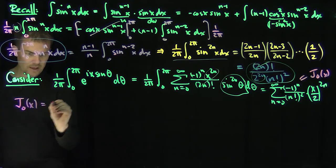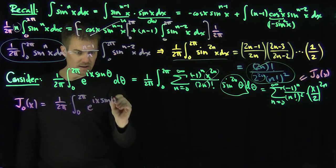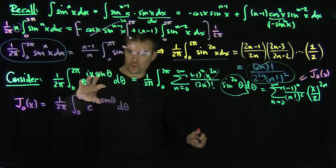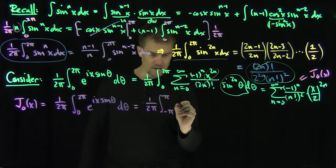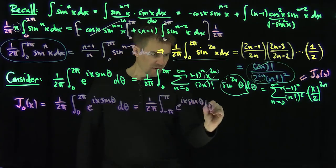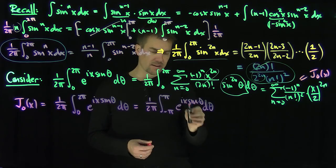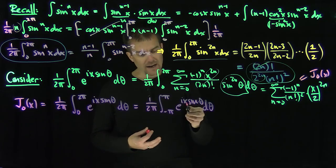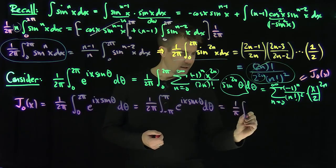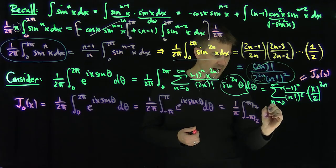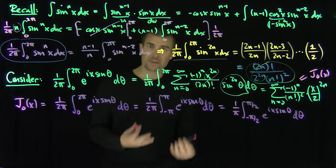So J₀(x) = (1/2π) times the integral from 0 to 2π of e^(ix sin θ) dθ. I can also shift this between −π and π by periodicity. By Euler's formula this is cos(x sin θ) + i sin(x sin θ), and the imaginary part is an odd function that vanishes, so I can also write this as (1/π) times the integral from −π/2 to π/2 of e^(ix sin θ) dθ. All of these are valid integral representations for the Bessel function of order 0.